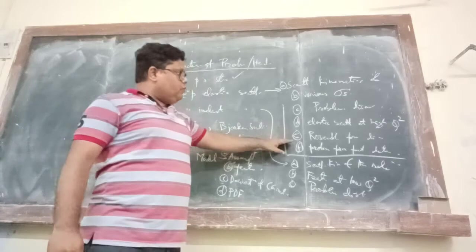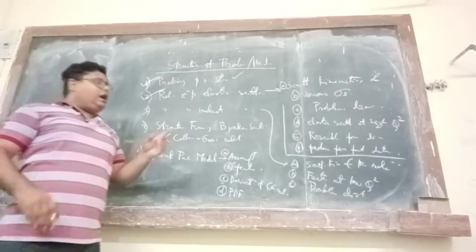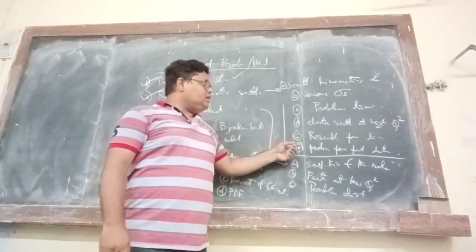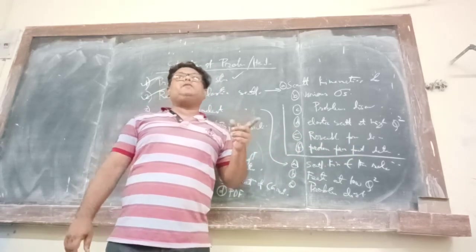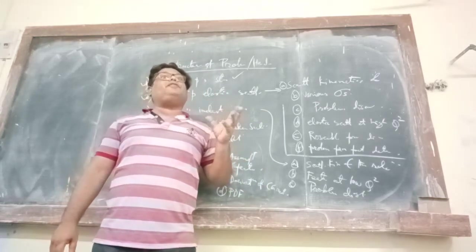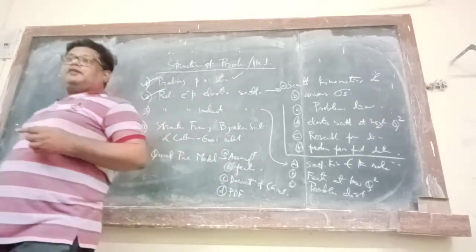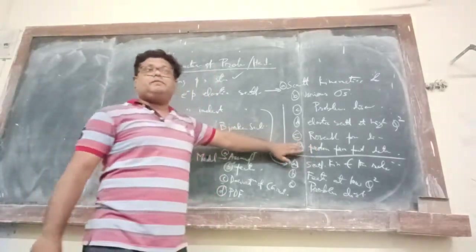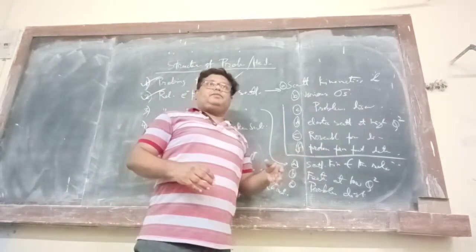And after that, we discussed taking into account the experimental data. What was the experimental data from which we extracted the proton form factor? Can anyone tell me? It was the electric or magnetic form factor data. Remember? GE, GM form factor. Look into your copies. I have talked about it on several occasions. So from there, we talked about the estimation of proton form factor experimental data.